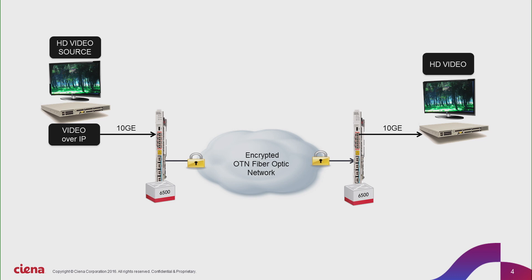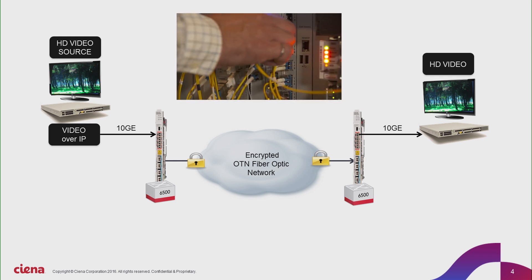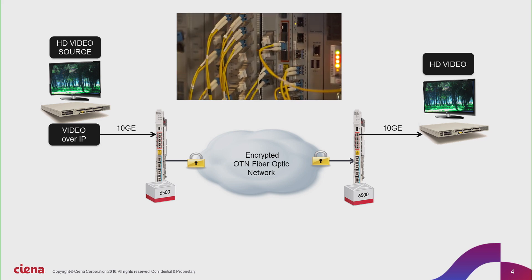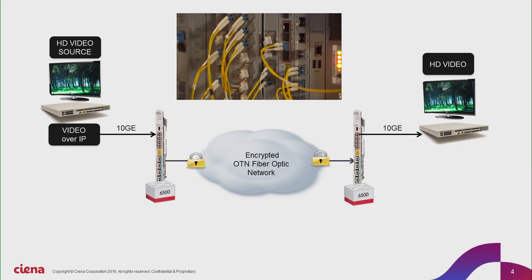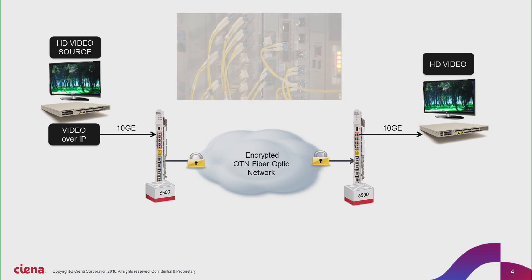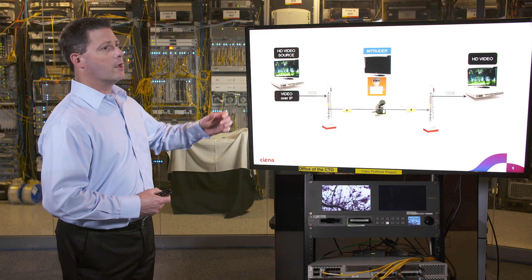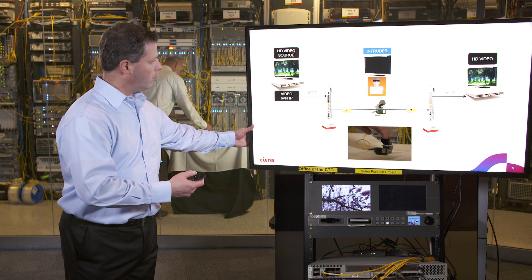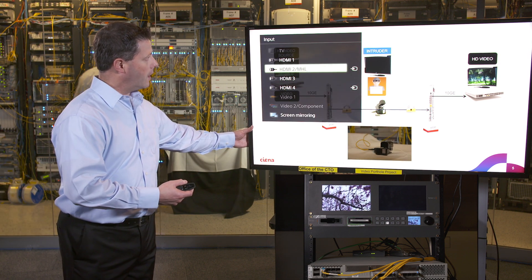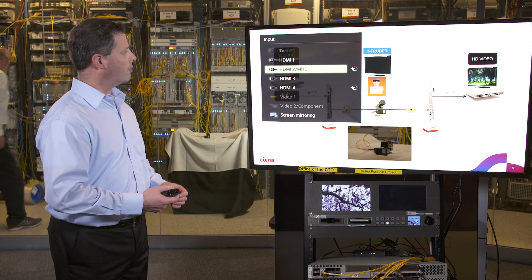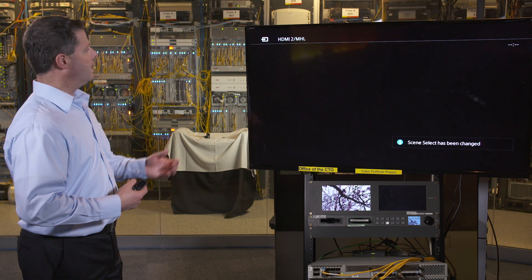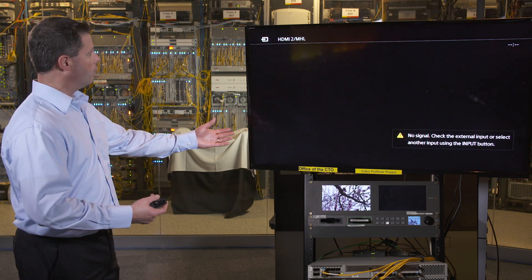My colleague is reconfiguring the equipment to move away from a non-encryption card to an encryption card, and once that network is complete, we will clamp the fiber onto the network and go back to the video interface. We will see that with the data now being encrypted, we do not see any video signals coming in.